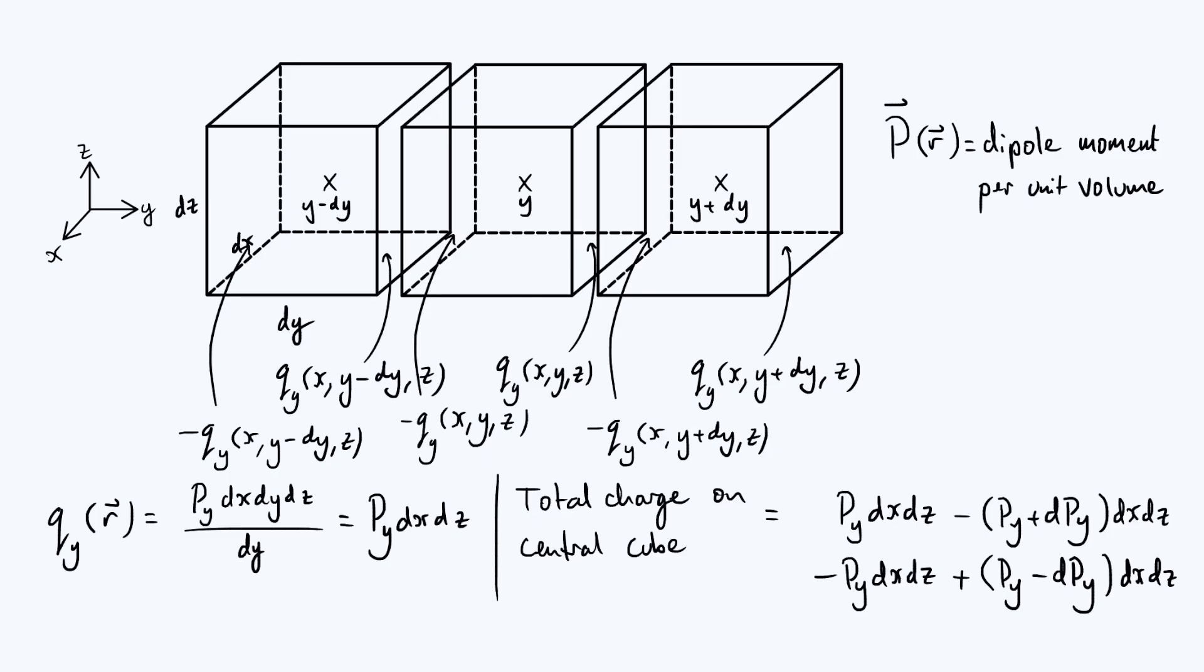Now this expression is almost but not quite correct. The complication is that the cuboids are in contact and if we go with this expression we are going to be double counting all of the charge. In other words, we're going to be counting the charge on each face as being part of the cube on the left of that face and part of the cube on the right of that face.